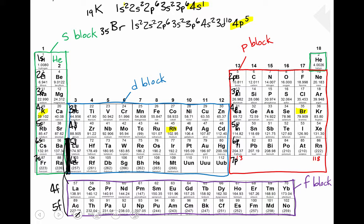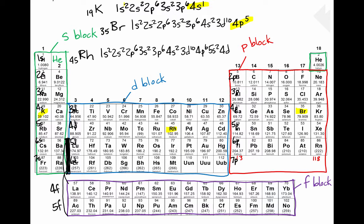In our next example, we're going to draw the electron configuration for rhodium, element number 45. Before I draw this, see if you can predict how this configuration will end — what will be the last sublevel and superscript? The electron configuration for rhodium ends with 4d7, and you could have predicted that by looking at rhodium's position on the periodic table. It is the seventh element in the 4d row.